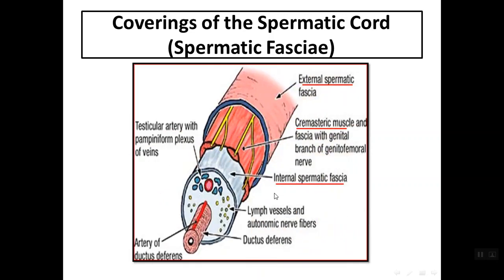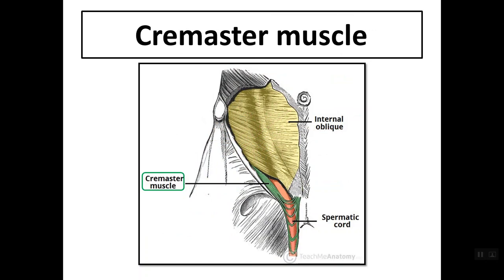The spermatic cord ends at the testis. Its layers are: the external spermatic fascia, the cremasteric fascia or muscle, and the internal spermatic fascia. The cremasteric fascia also contains muscle fibers called the cremasteric muscle, supplied by the genital branch of the genitofemoral nerve. With its contraction, the cremasteric muscle drags the scrotum upward, bringing the testis closer to the body.